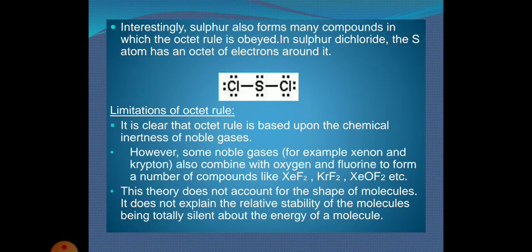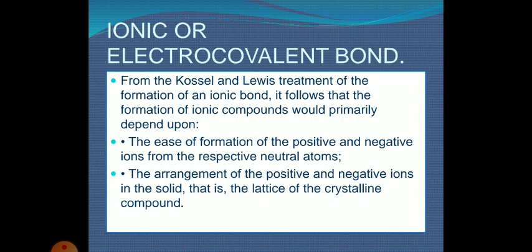Interestingly, sulfur also forms many compounds where the octet rule is obeyed, such as sulfur dichloride. However, in some sulfur compounds the total number of electrons surrounding sulfur can be as many as 18. Further limitations of the octet rule include: it is based on the chemical inertness of noble gases, yet some noble gases combine with oxygen and fluorine to form compounds like XeF₂, KrF₂, and XeOF₂. Also, this theory does not account for the shape of molecules, nor does it explain the relative stability or the energy of molecules.